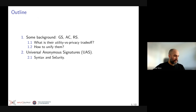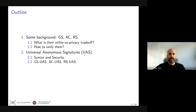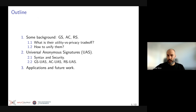I will introduce the scheme by giving its syntax and a high-level notion of the security properties that it needs to meet. Then, to convince you that UAS is really universal, I will describe how we can instantiate group signatures, anonymous credentials, and ring signatures as concrete restrictions of UAS. I will finalize the talk with potential applications and future work.